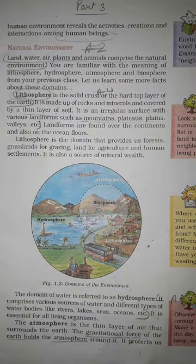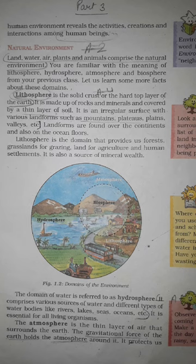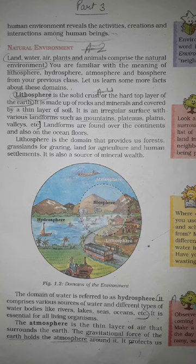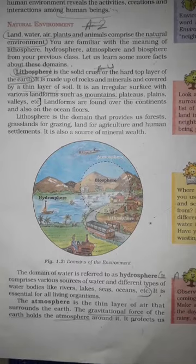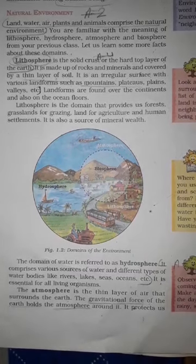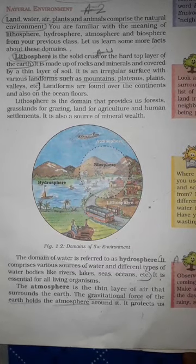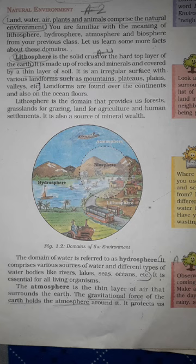Let's start the first component of the environment — the natural environment. Land, water, air, plants and animals comprise the natural environment.